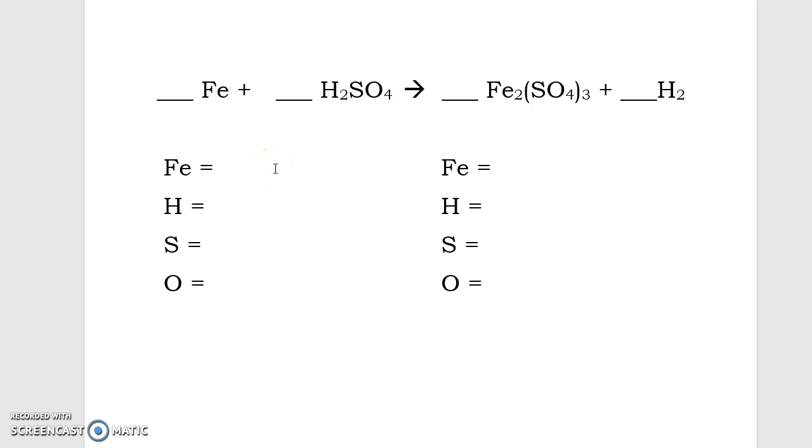So we're looking at just the number of Fe, or iron, atoms on the reactant side. We have 1. We have 2 hydrogen atoms because it's H2. We have 1 sulfur atom because it's H2S. There's no subscript next to the sulfur, so there's just 1 there. And we have 4 oxygen atoms on the reactant side.